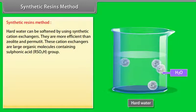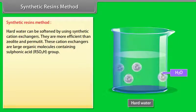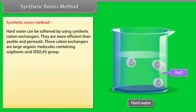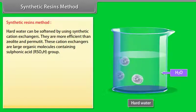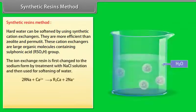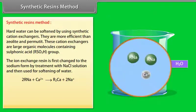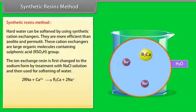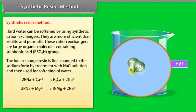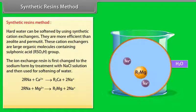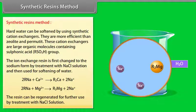Synthetic resins method: Hard water can be softened by using synthetic cation exchangers. They are more efficient than zeolite and permutit. These cation exchangers are large organic molecules containing sulfonic acid RSO3H groups. The ion exchange resin is first changed to the sodium form by treatment with NaCl solution, then used for softening of water. The resin can be regenerated for further use by treatment with NaCl solution.